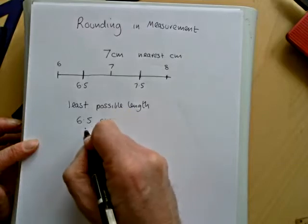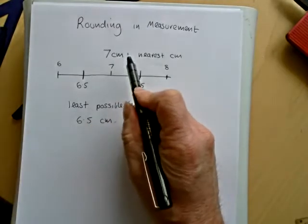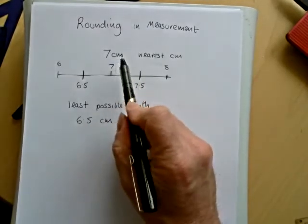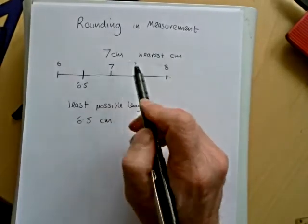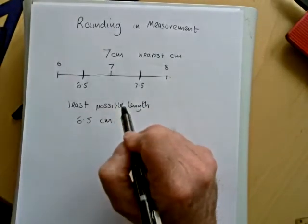It could have been as low as 6.5. Now, when I told you the measurement, I didn't say it's exactly 7. I said it to the nearest centimeter, it's 7. So the least is 6.5.